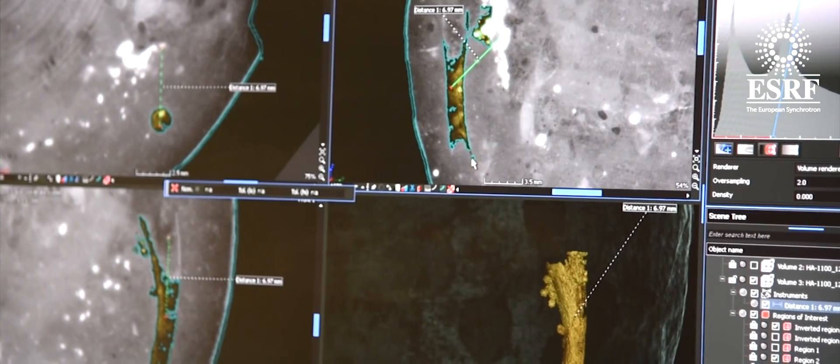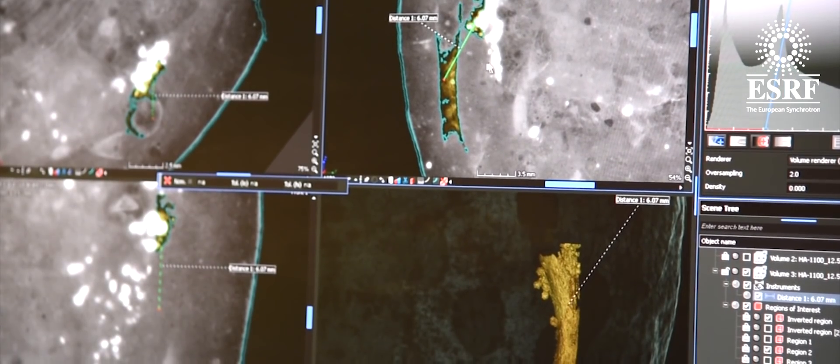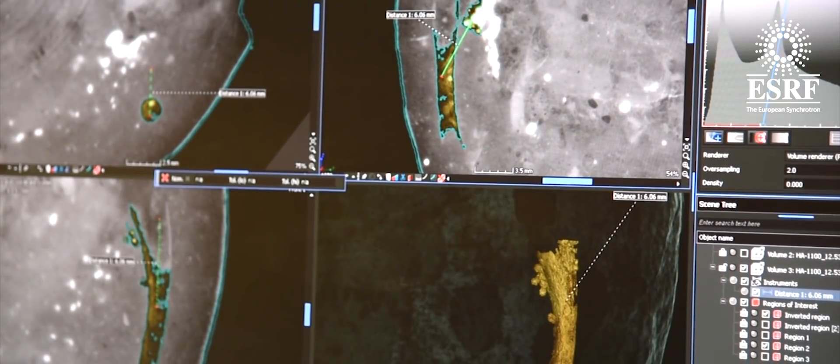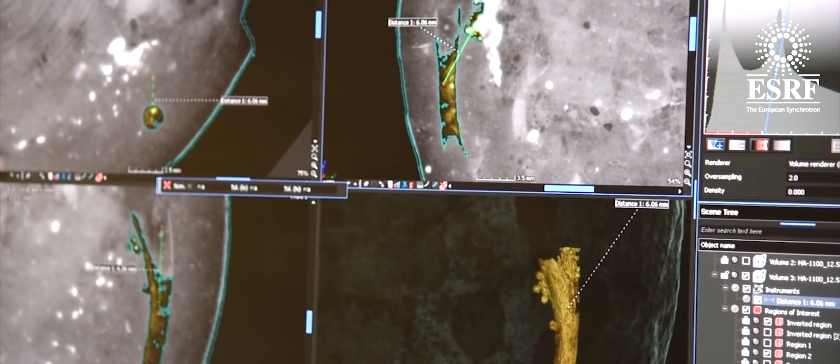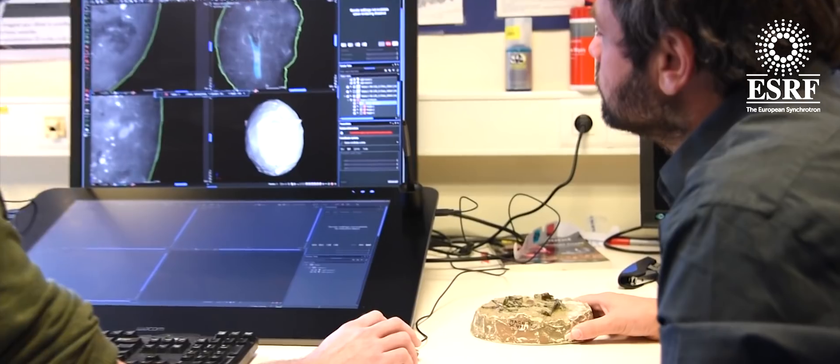And on top of that, we don't only have the eggs with the embryos inside, but we also have neonates, the baby dinosaurs. And also, we have a two-year-old dinosaur of the same species.